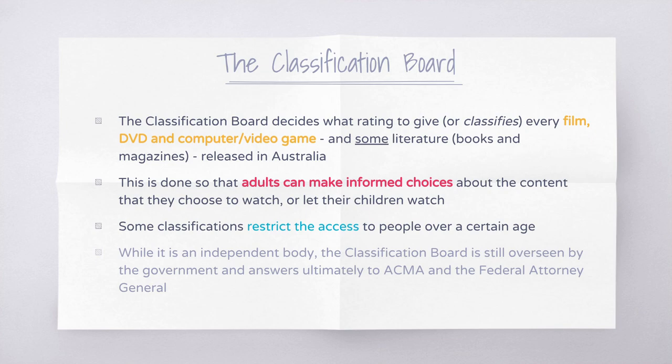While the Classification Board is an independent body, it is still overseen by the Australian Federal Government and ultimately answers to ACMA. Its figurehead is the Federal Attorney General, who is a politician and a member of parliament elected by the people.